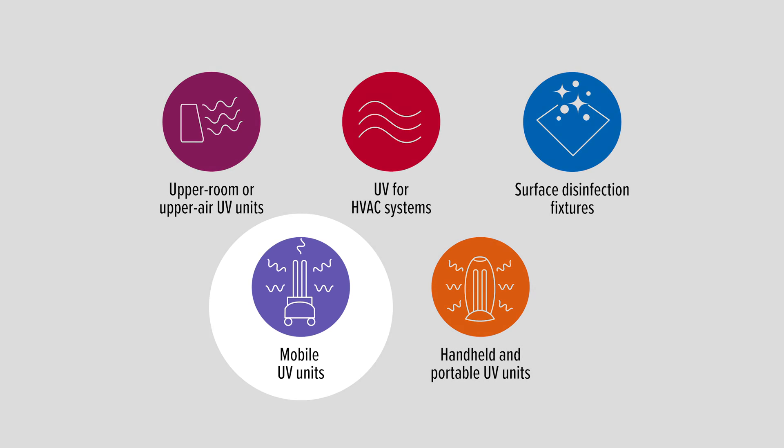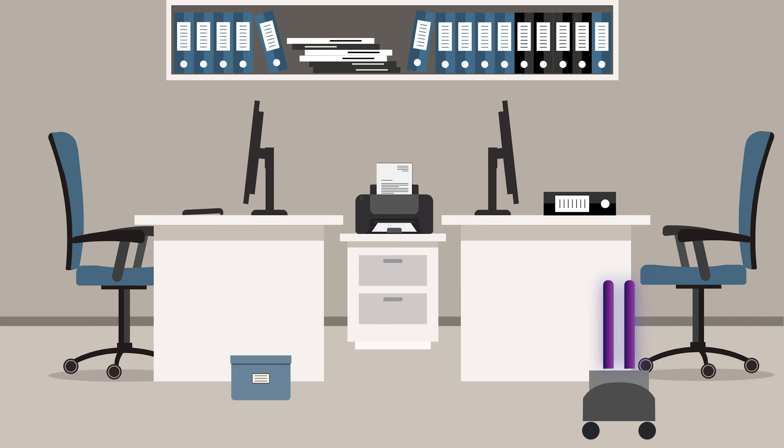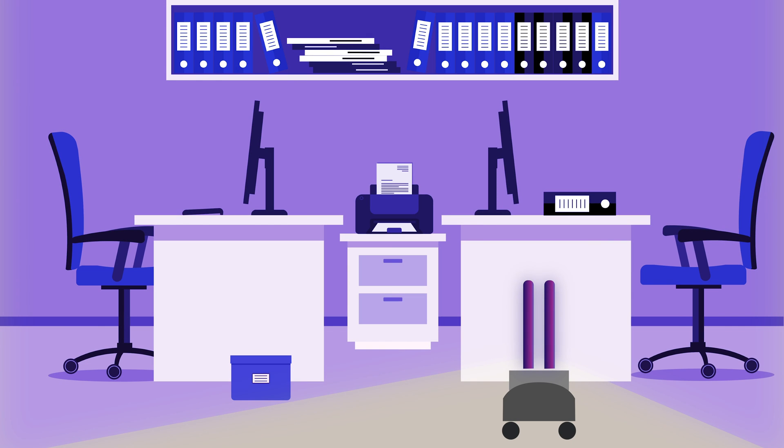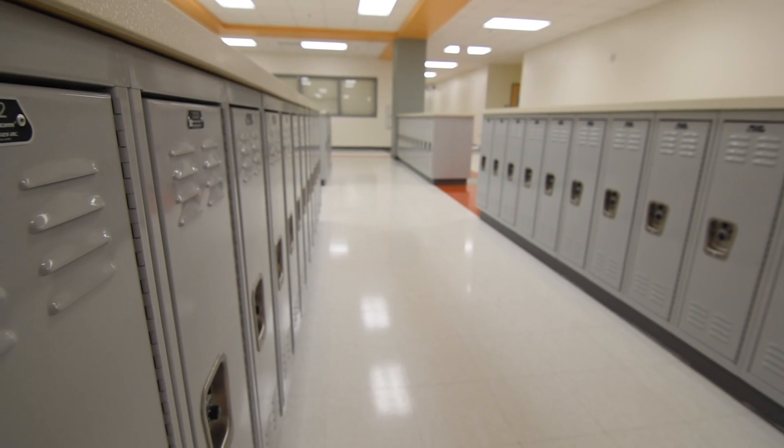A fourth option is mobile UV units. Mobile units give you great flexibility. You can move them from room to room as needed, but they require labor, and they may require multiple cycles to ensure UV rays hit all surfaces. Hotels, hospitals, and schools are excellent applications for these units.